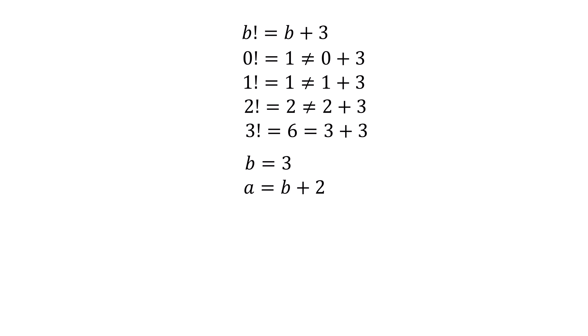If that's the case, then we know a is equal to b plus 2, because we made a minus 2 equal b. So a equals b plus 2. That means a is 3 plus 2, which means a is 5.